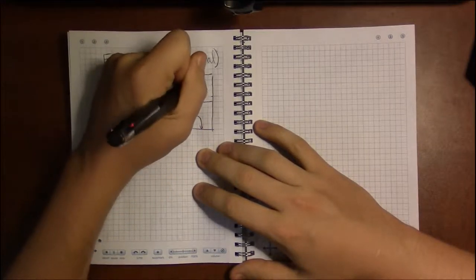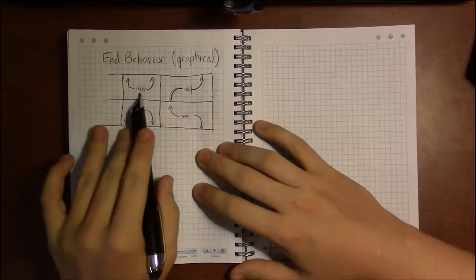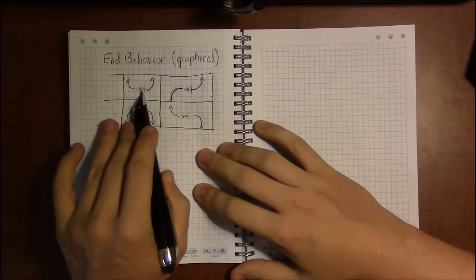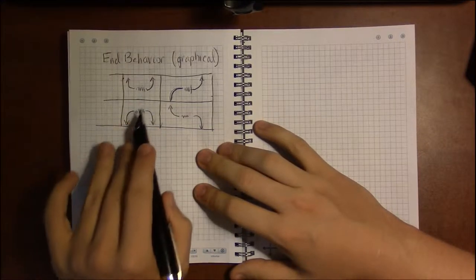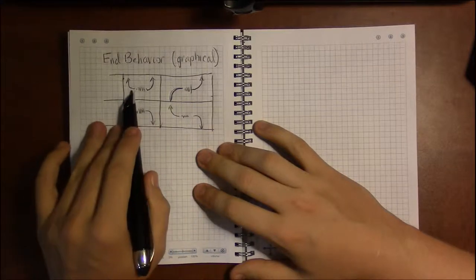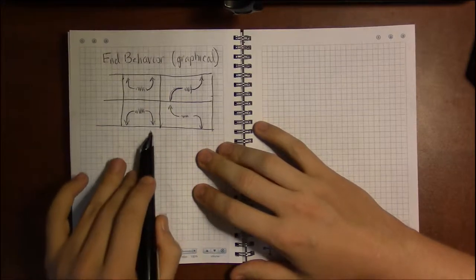Now I'm doing this squiggly line in the middle here because end behavior really doesn't care about what happens in the middle. So this squiggly line is just 'I don't care what happens in here.' It's just on the far left and far right: does it go up or does it go down?